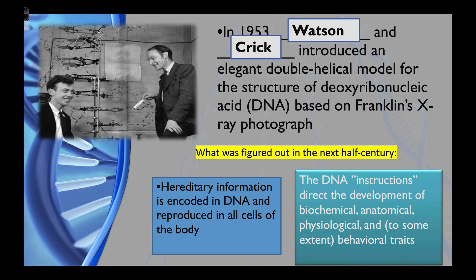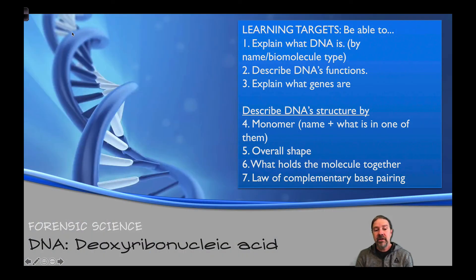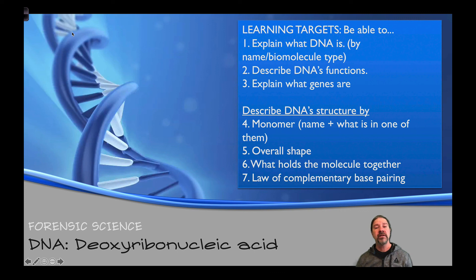That concludes our initial lecture on DNA for forensic science. Remember to reflect on your learning targets: explain what DNA is by name and biomolecule type; describe the functions of DNA; explain what genes are; name the monomer and its components; describe the overall shape of DNA; explain what holds the molecule together — the sugar-phosphate backbone and the hydrogen bonds between bases down the center; and lastly, explain the law of complementary base pairing. Until next time, stay safe and have a great day.